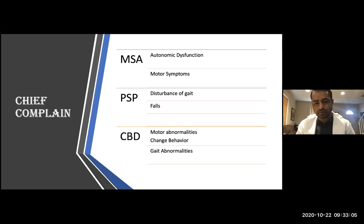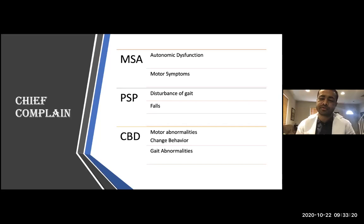In PSP, from the name — progressive supranuclear palsy — we might think the main symptom is inability to look upward, but that is not the most common symptom. The most common symptom is falls, and there is a particular term for the PSP gait — it is called the drunken sailor gait.